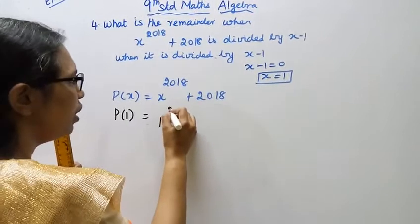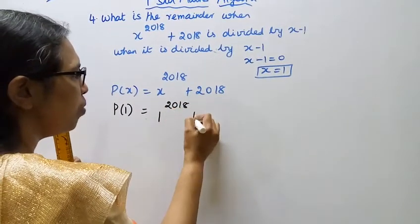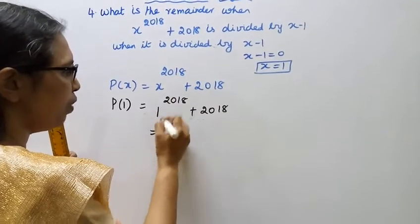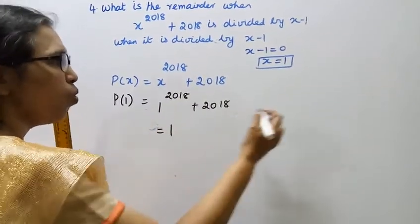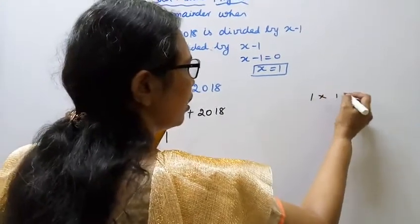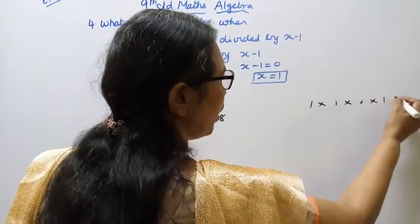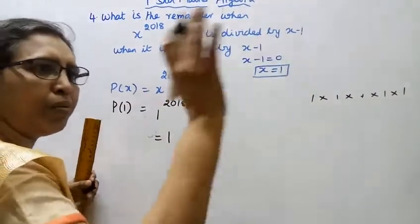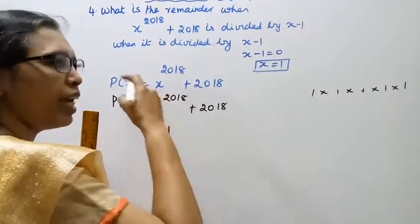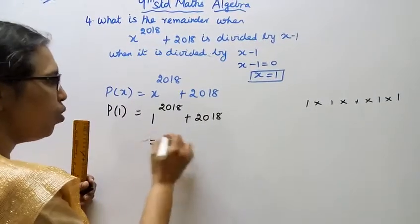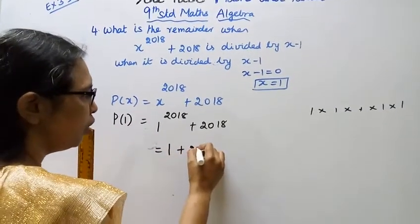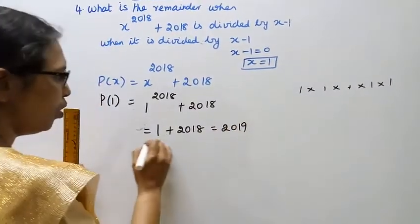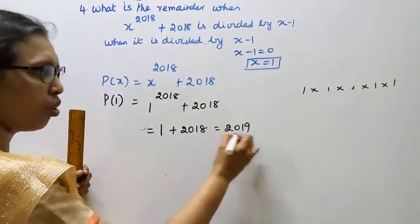It is 1 power 2018 plus 2018. 1 power 2018 is the value 1, since 1 multiplied any number of times is still 1. So 1 plus 2018 equals 2019. The remainder is 2019.